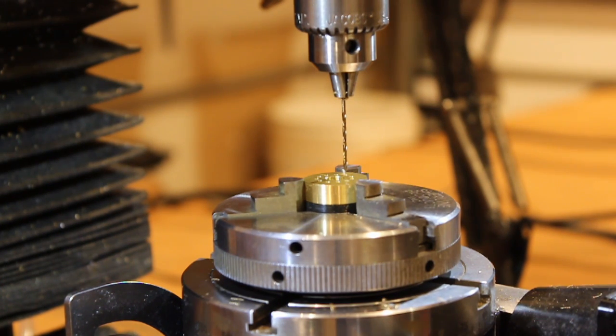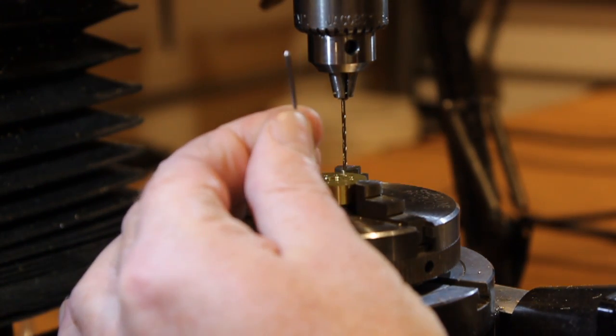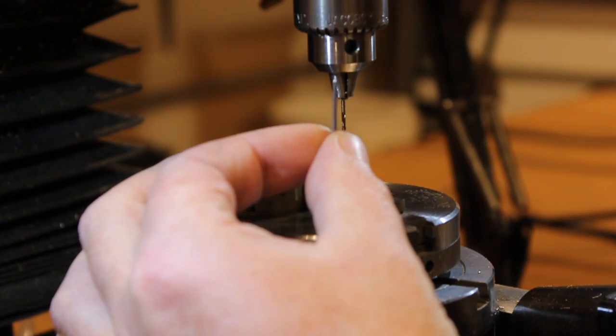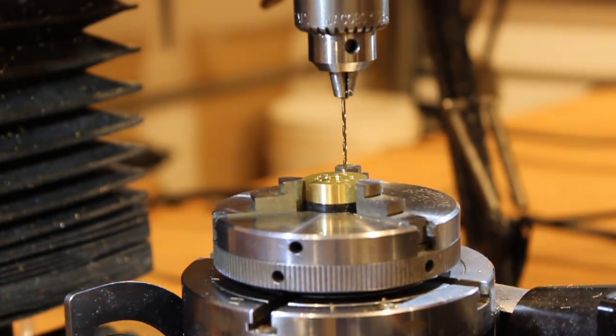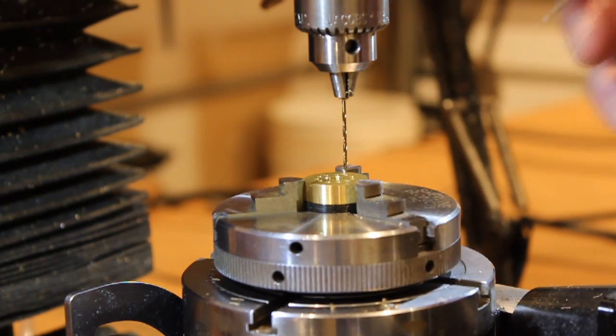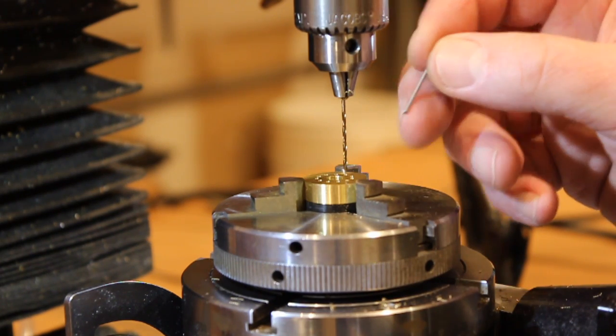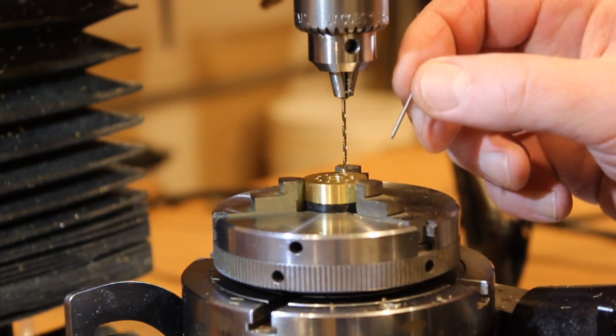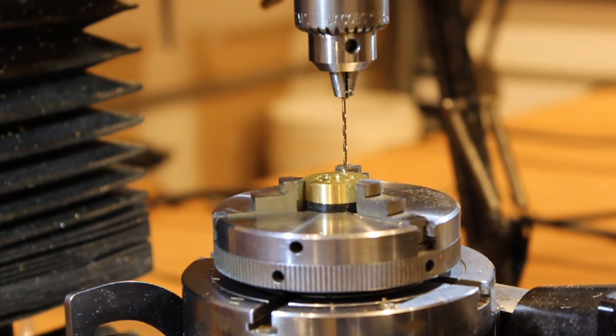Now I've switched over to a 1.25 millimeter drill bit because we need to place rods that are 0.049 inches in diameter to make the bars on the cage or the bars on the lantern. This is actually a piece of steel piano wire. You can buy these in all sorts of different diameters. I'll show you how we cut these later. I'll just drill one of these so you can see.